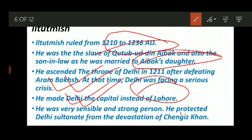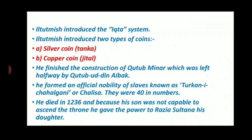He was a very sensible and strong person. He protected Delhi Sultanate from the devastation of Cengiz Khan. Cengiz Khan was a Mongolian king. There is a great deal about the Mongol invasion which I am not going to discuss in detail here, because the video will get very lengthy. Il-Tutmish was very strong and sensible — he protected Delhi from the devastation of Cengiz Khan, who had come in search of somebody.